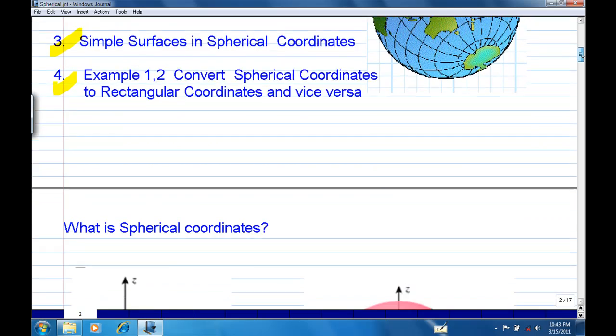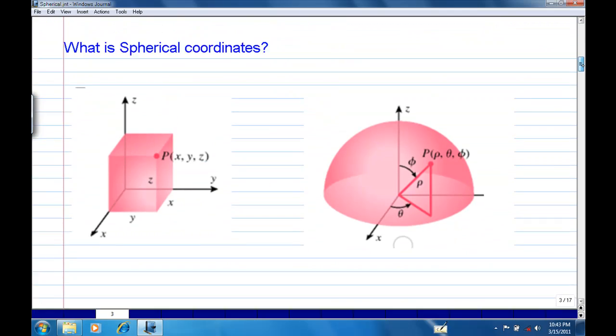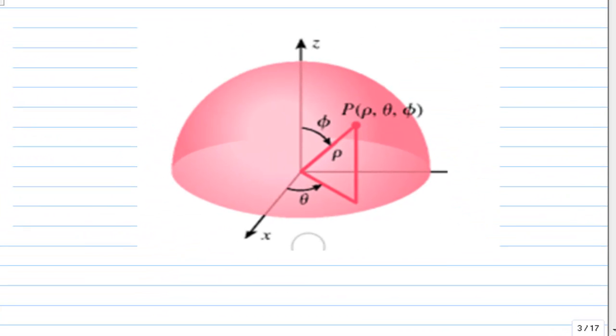First, what is spherical coordinate? We are well aware that any point in the three-dimensional system can be located by using x, y, z or rectangular coordinate system. But there is also another way. It consists of three numbers. First one is rho. Rho is distance of the point measured from the origin.